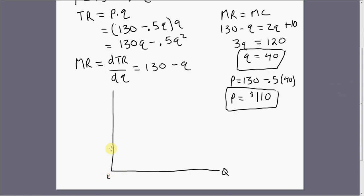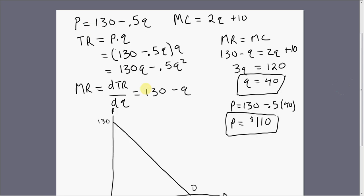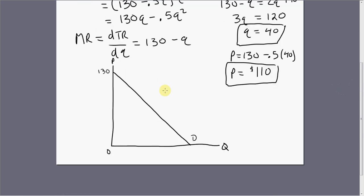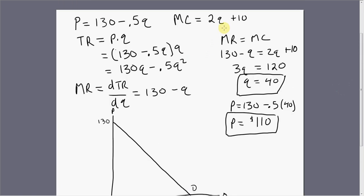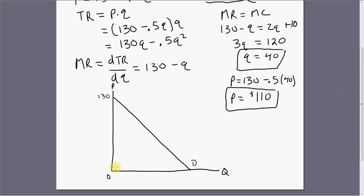So I'm going to graph the firm's demand equation. It's a linear demand equation. It has a vertical intercept of 130. Marginal cost is 2Q plus 10, so the vertical intercept for marginal cost in this problem is 10. I'll sketch something like that.